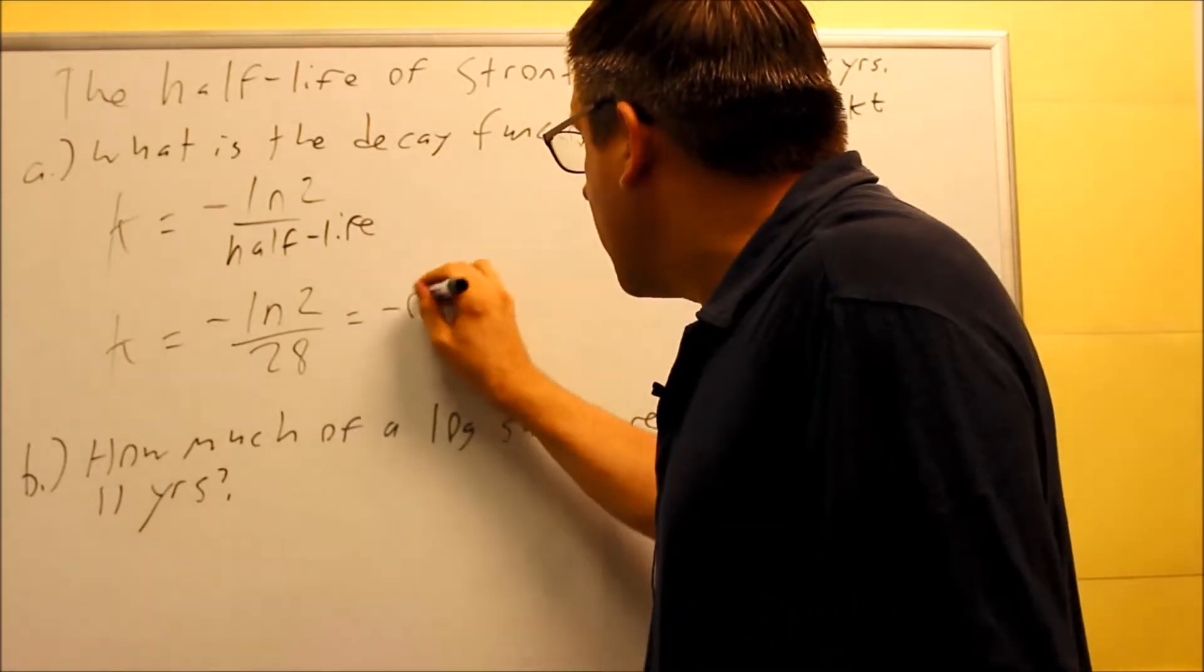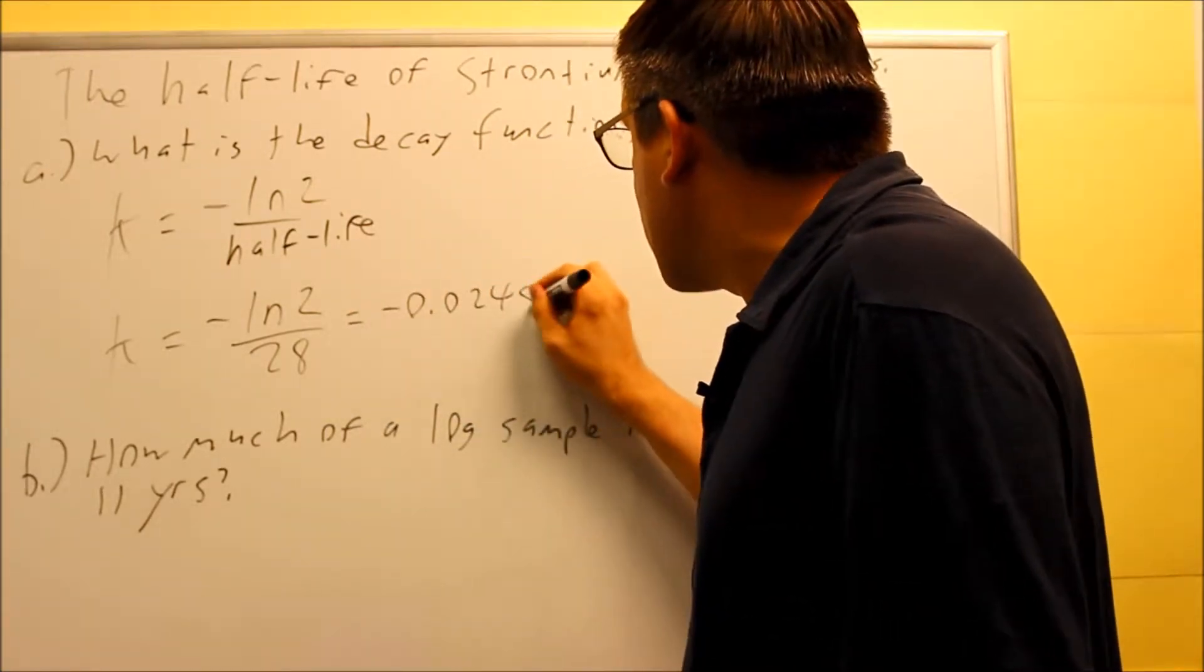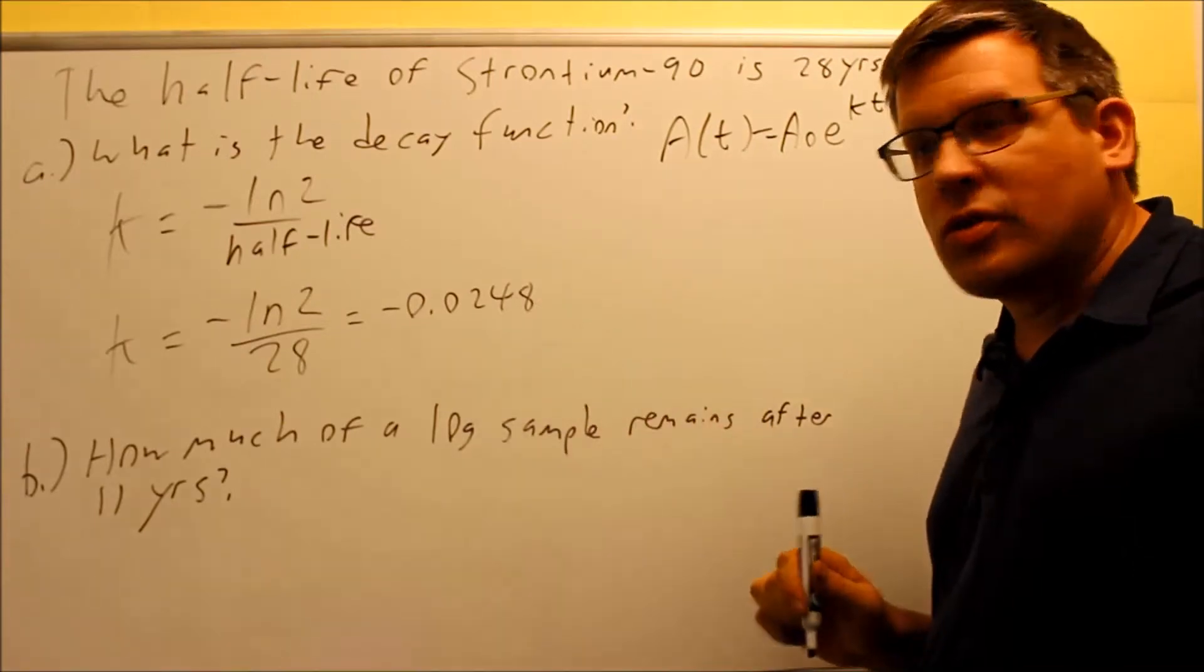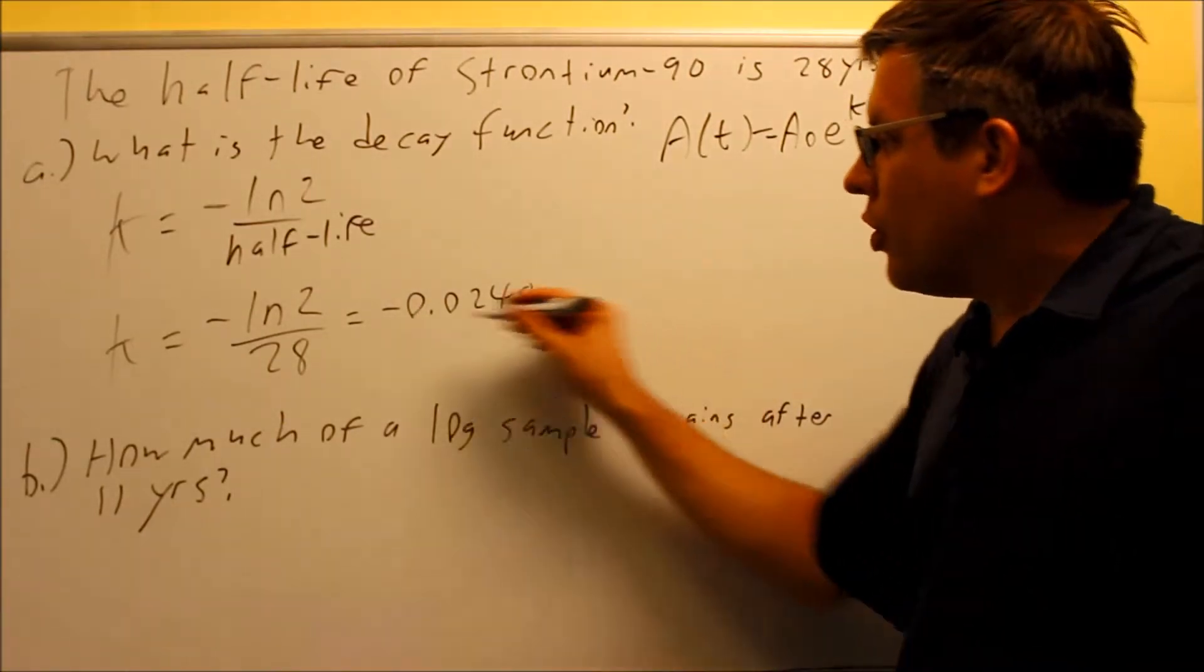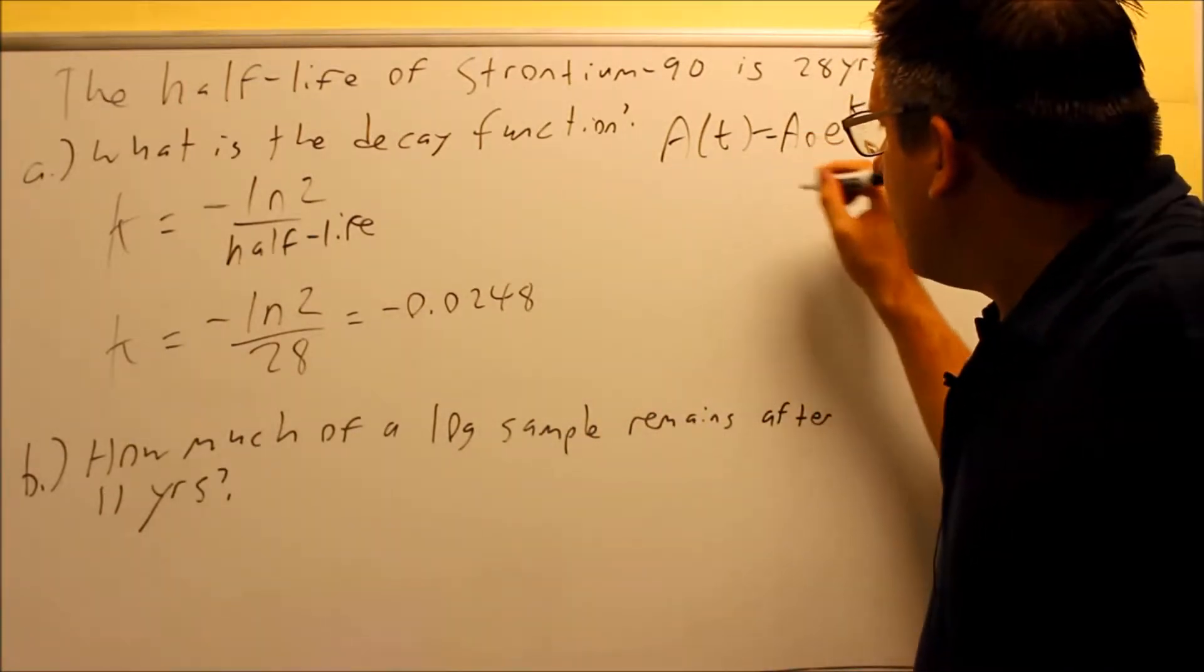K equals negative ln 2 over 28. If we put that into a calculator and we round to four places like before when we found our k-value, we always want to use four places, you get negative 0.0248.